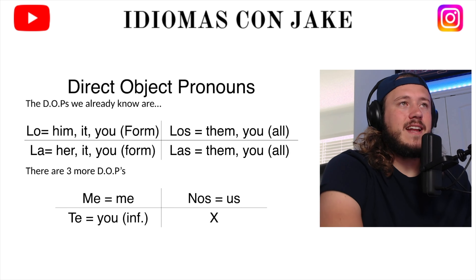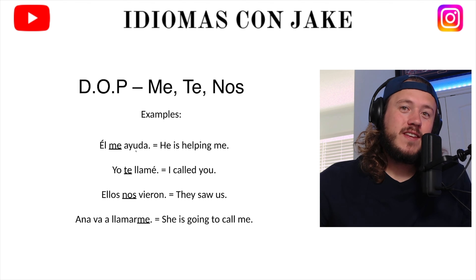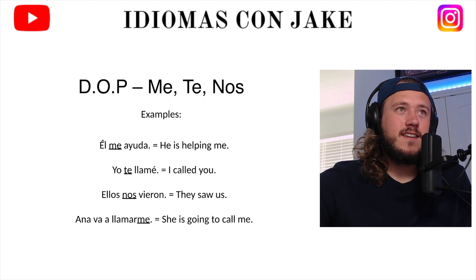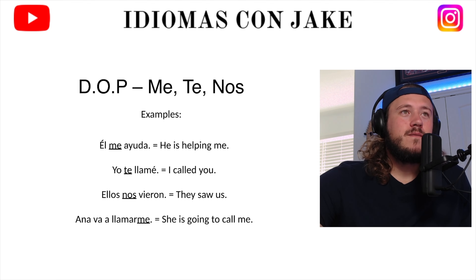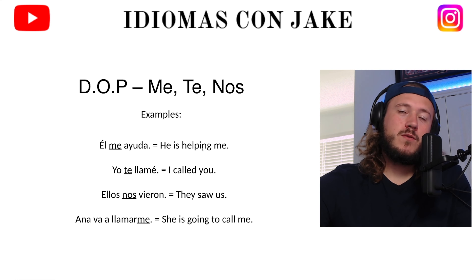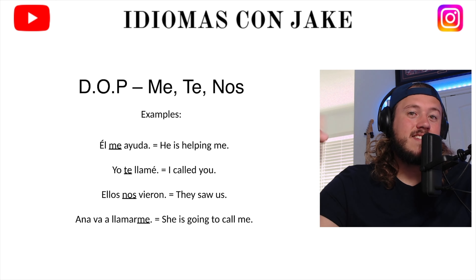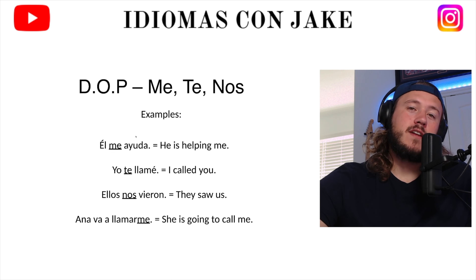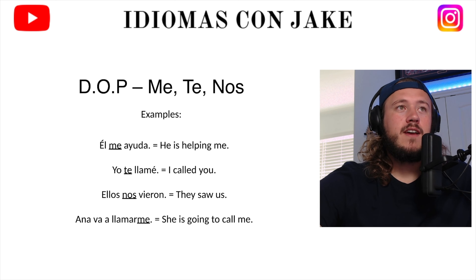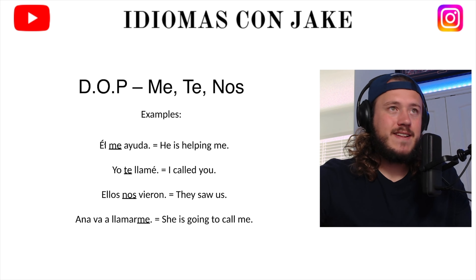Vamos a ver un par de ejemplos. Él me ayuda. Who is the person doing the action? ¿Quién es la persona que hace la acción? Él — he's the one who's doing the helping. Ayuda es el verbo. ¿A quién está ayudando? Who is he helping? Who's the person receiving the action? That's my direct object — me. Note that the syntax changes: in English I put 'me' after the verb — 'He is helping me.' En español, lo pongo enfrente del verbo — in Spanish I put it in front of the verb: Él me ayuda. This 'me' tells me that I am the person receiving the action of the verb.